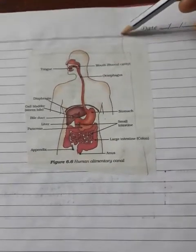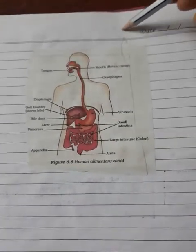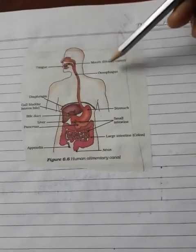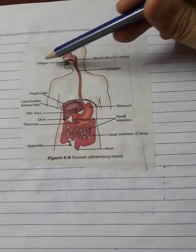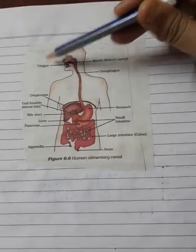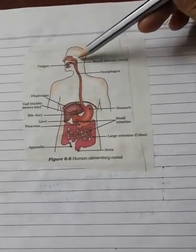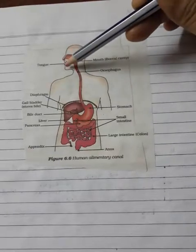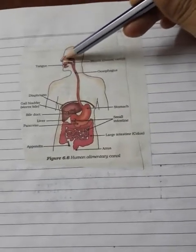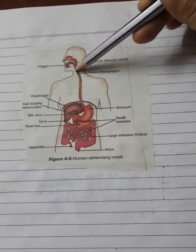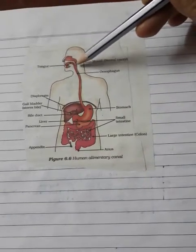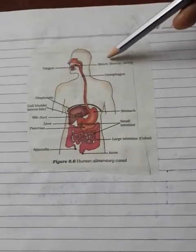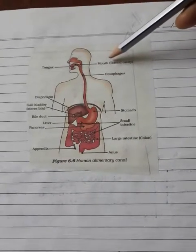It will be comprising of teeth. We will discuss about it. It will also be comprising of the tongue, the lateral cheek, and the transverse lips. The buccal cavity will also have salivary glands, which are three in number.